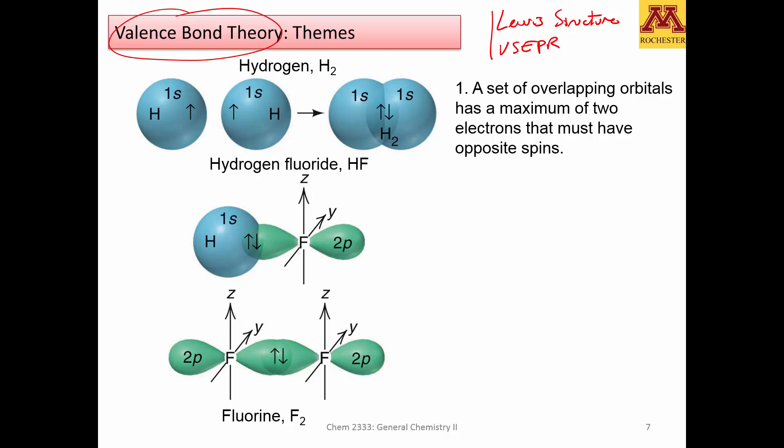So what is the foundation of valence bond theory? The foundation is that a set of overlapping orbitals has a maximum of two electrons. So atomic orbitals combine, and when they combine, the combination will only allow two electrons at a time, one pointing upwards, one pointing downwards, or two opposite spins, one one-half, the other one minus one-half. The other principle is that it looks for large overlap between the two atomic orbitals that are going to share their electrons. And the larger the overlap, the stronger the bond.